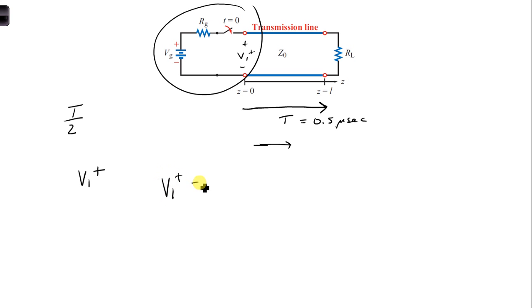And so V1 plus, if we put that into our equation, we put in VG, which is given as 15 volts, times Z naught, since the V1 plus has an impedance of Z naught. So Z naught over RG plus Z naught.